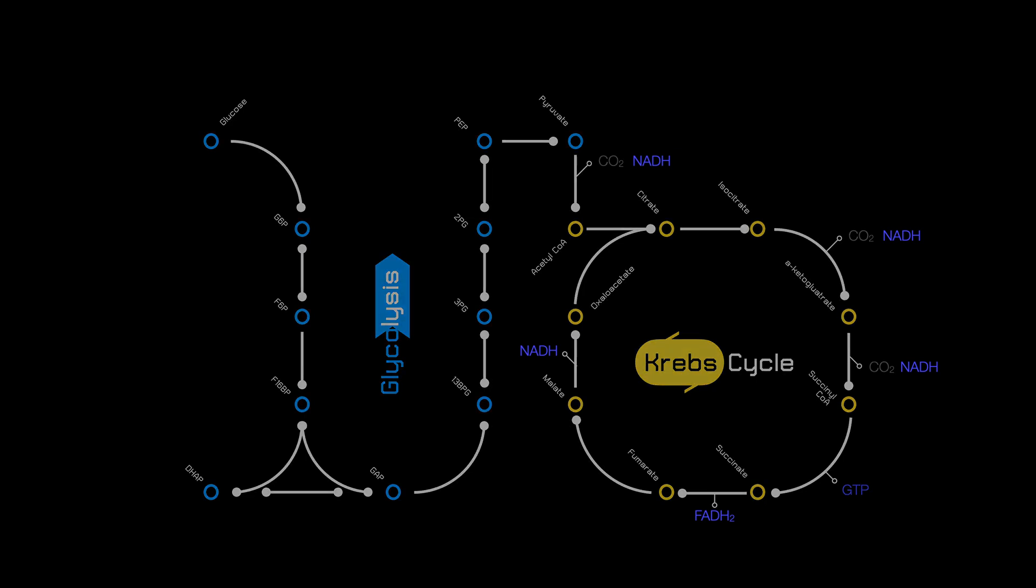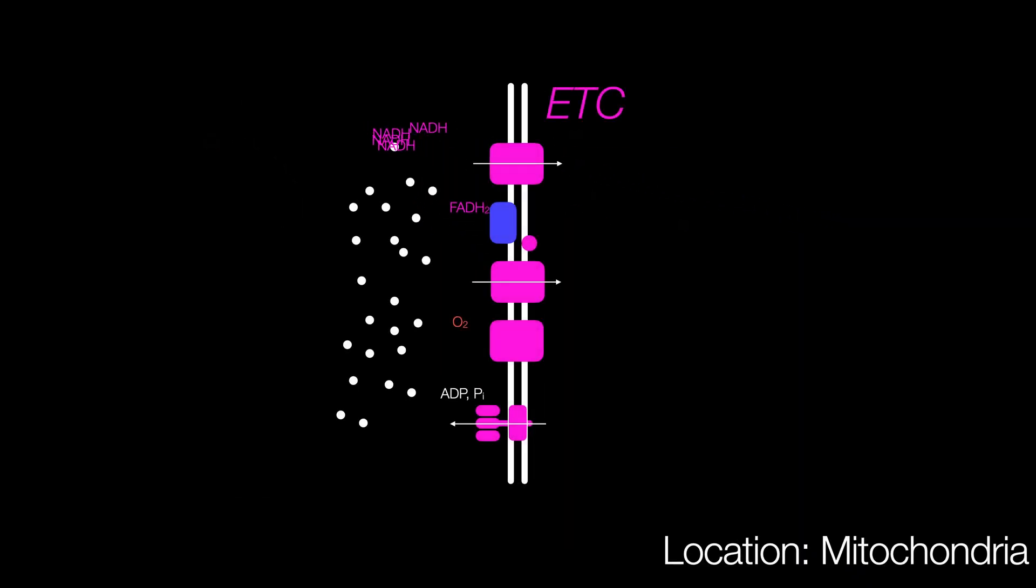The smaller energy packages move towards the electron transport chain, turning the energy in those packages into pumping a dam full of hydrogens while using oxygen to complete the circuit. Once the floodgates open, the flow of hydrogen is used to recharge ATP.